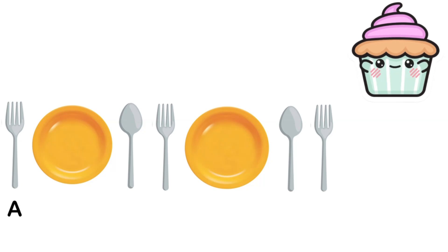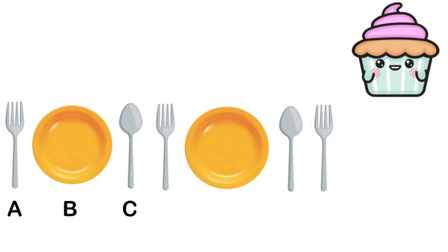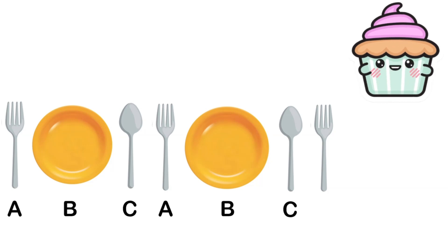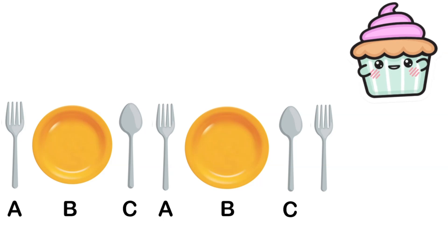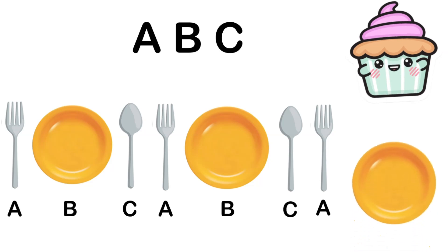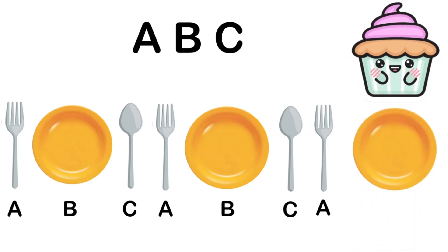I found another pattern while setting the table. The pattern goes: fork — we'll give that an A, plate — B, spoon — C. Then the pattern repeats itself: fork A, plate B, spoon C. It's an ABC pattern! Next we have a fork, which is an A. After that comes a B — what is B? It's a plate. The next thing in the pattern is a plate. Good job!